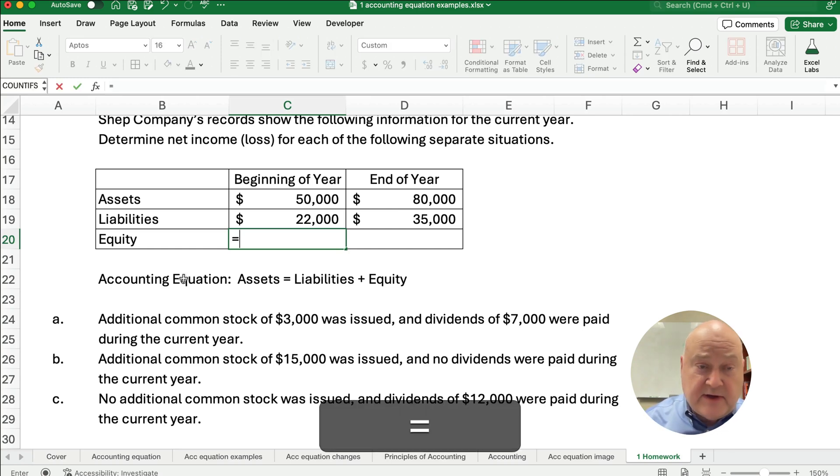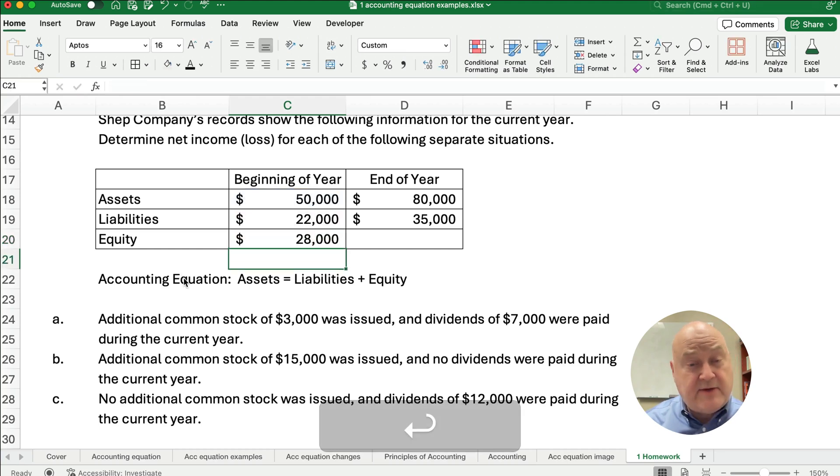So we're going to use algebra and say well assets minus liabilities equal equity and we do the same thing for the end of the year. So we know our beginning of the year is 28,000 and the end of the year is 45,000.